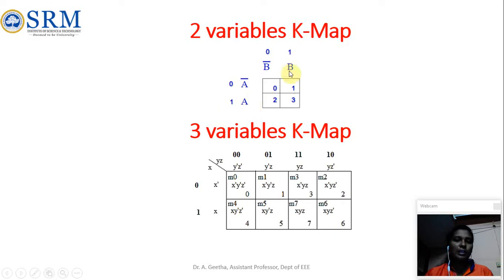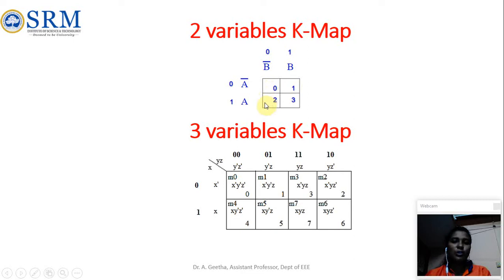We need to group the number of zeros present in the table for POS form. In this session we will consider only the SOP form of logical expression. Since we are considering the SOP form, 0 represents the complemented value and 1 represents the uncomplemented value. The first row indicates A-bar and the second row indicates A. Similarly, the first column indicates B-bar and the second column indicates B. This is the general format for the 2-variable K-map.